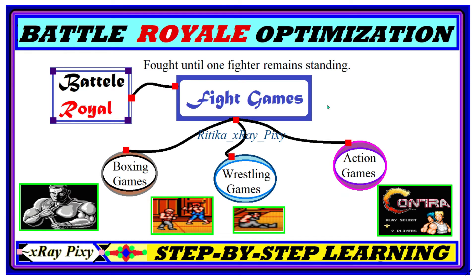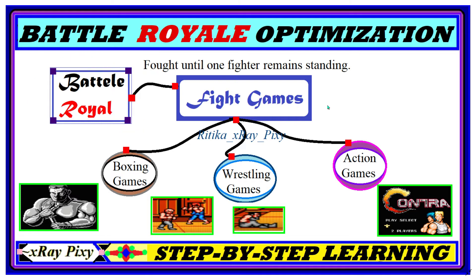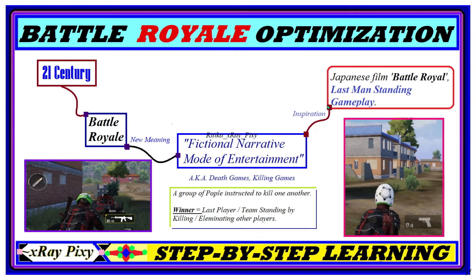Now we will understand how the Battle Royal Optimization algorithm works and how it is inspired by the game. Before the 21st century, 'battle royal' referred to fight games such as boxing, wrestling, and action games — fought until one player or fighter remains standing. In the 21st century, battle royal took on a new meaning: a fictional narrative mode of entertainment also known as death games or killing games.